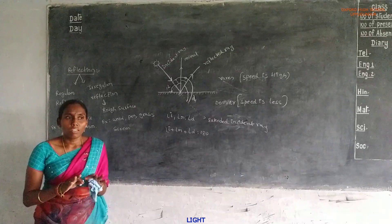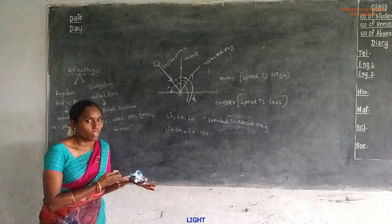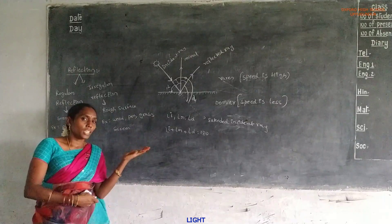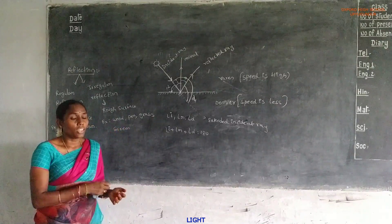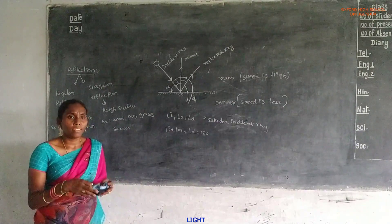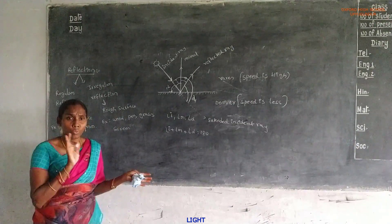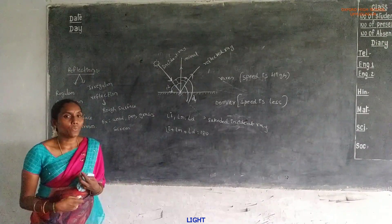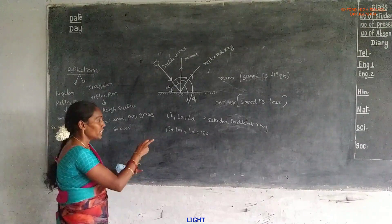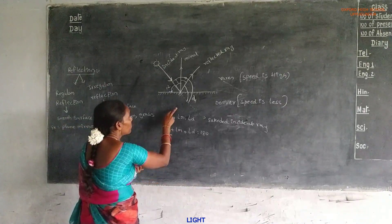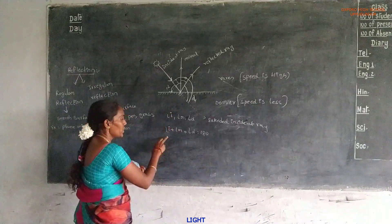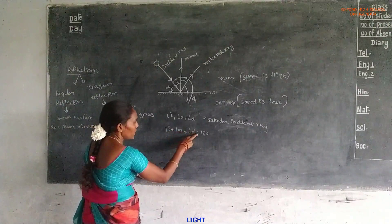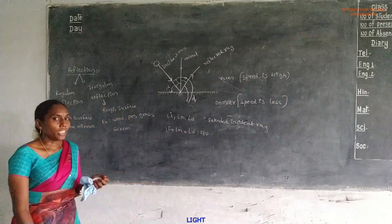Reflection takes place on smooth surfaces or curved surfaces. Reflection always takes place on any surface — either smooth, rough, plain, or curved. The different angles are measured from this diagram. The relation is: angle of incidence plus angle of reflection plus angle of deviation equals 180 degrees.